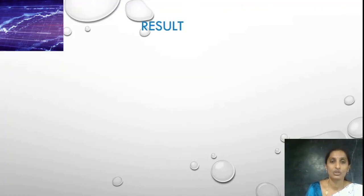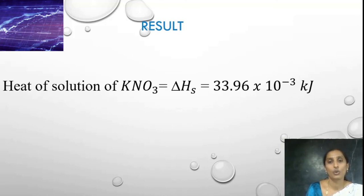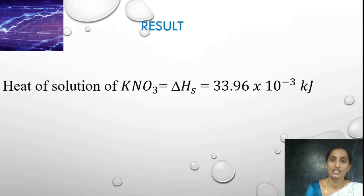Finally, coming to the result: the heat of solution of potassium nitrate is equal to 33.96 kJ per mole. This is the end of our experiment. Thank you.